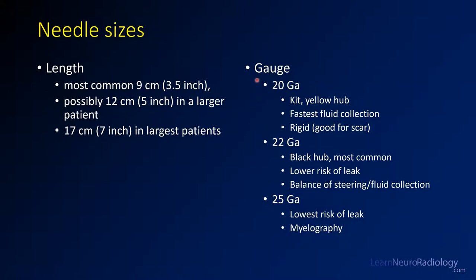Needle gauge — the thickness of the needle — is also an important consideration. A 20-gauge needle (yellow hub) comes in many kits and gives the fastest fluid collection with the least bending, but carries a slightly larger risk of CSF leak. A 22-gauge needle is a nice choice for most procedures — it has intermediate leak risk and a good balance of steering, rigidity, and fluid collection. A 25-gauge needle has the lowest leak risk but is too slow for CSF pressure measurement and fluid collection; it can be used for myelography if you're simply injecting contrast.